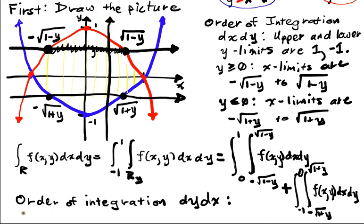So the x limits are from negative 1 to 1. And the y limits... Well, the first thing I'm going to hit is the blue curve, which was x squared minus 1.